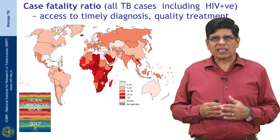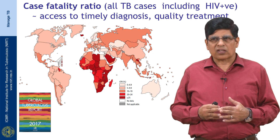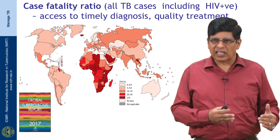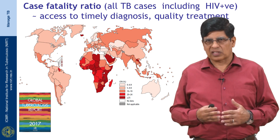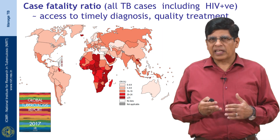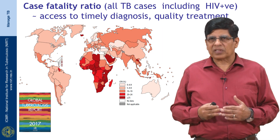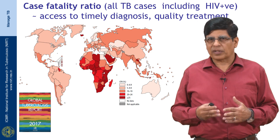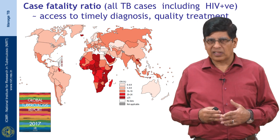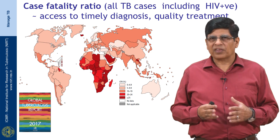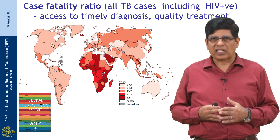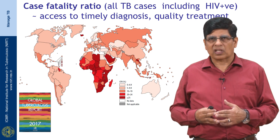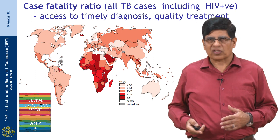Case fatality ratio is another key epidemiological indicator of TB and represents the product of case-finding efficiency and treatment efficiency. In India, about 17% of incident cases succumb to the disease, compared to 16% at the global level. We need to reduce this case fatality rate to less than 6% to achieve the targets envisaged under the End TB strategy.